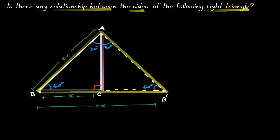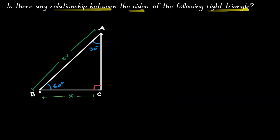Let's erase all this and concentrate on the given triangle ABC. Let's write down our first relationship. We can say that the hypotenuse of this right triangle is 2 times the length that is opposite of 30 degrees — the shortest side in your triangle.